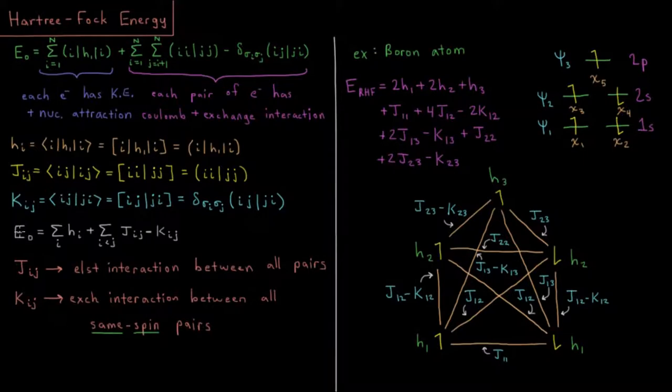So in that case, we can write the ground state determinant energy, or Hartree-Fock energy, as being a sum over the core energy of each electron, plus the pairwise Coulomb minus exchange energy of all electron pairs.